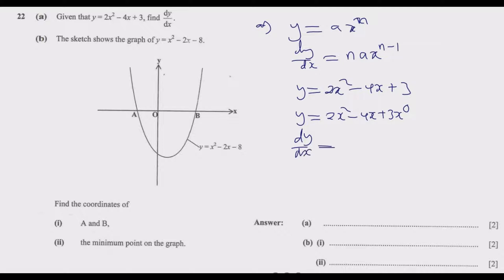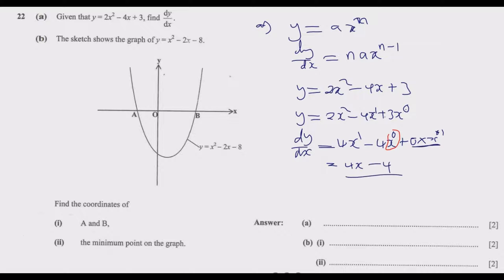dy/dx equals 2 times 2 which is 4, then x to the power 2 minus 1 which is 1, then minus: the power 1, 1 times 4 is 4, multiplied by x to the power 1 minus 1 which is 0, then plus 0 times 3 which is 0. Simplifying, we get 4x minus 4, which can also be written as 4(x minus 1). That is the answer.